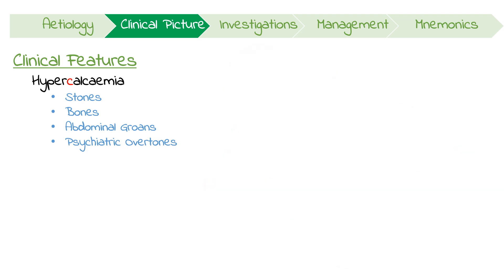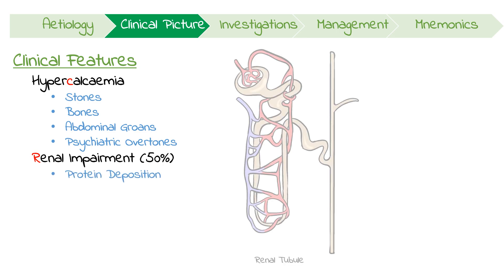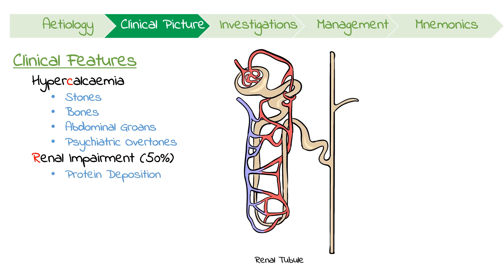Myeloma can also cause kidney impairment in 50% of patients, and it's due to multiple mechanisms. Firstly, the deposition of excessive proteins in the renal tubules can cause damage, but other factors like hypercalcemia and hyperuricemia can also contribute to renal pathology.